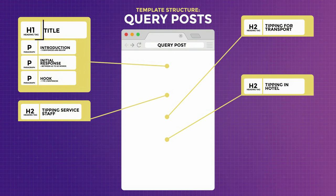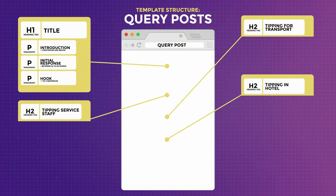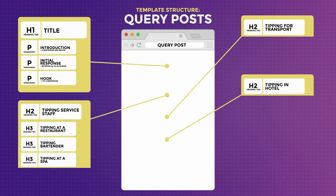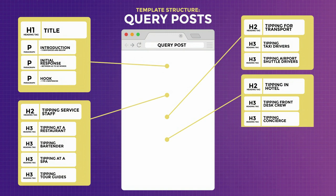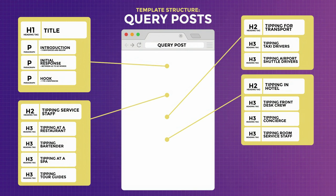The title of your article is an H1 heading tag, and your subheadings that answer the title should be H2 headings. For example, subheadings could be tipping service staff, tipping for transport, and tipping in hotel. Depending on the topic, you could break them down further as H3 headings or bold words — like tipping at a restaurant, tipping bartender, tipping at a spa, tipping tour guides, and tipping taxi drivers. All these subheadings are still relevant to the main topic. From here, you can write a couple of paragraphs for each subheading. When you break things down this way, writing becomes much easier because you are answering one subtopic at a time instead of answering the whole question at once.